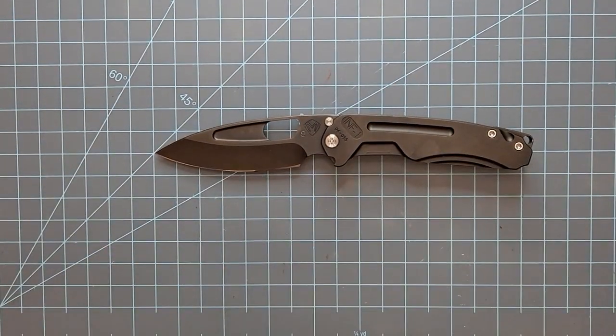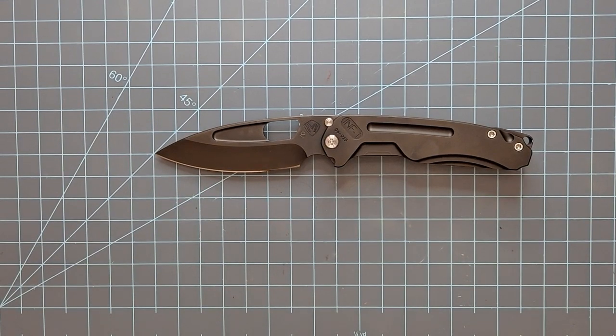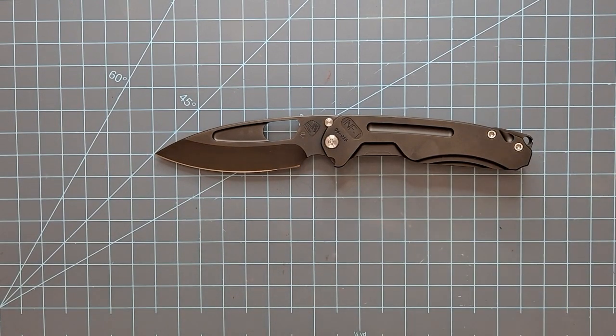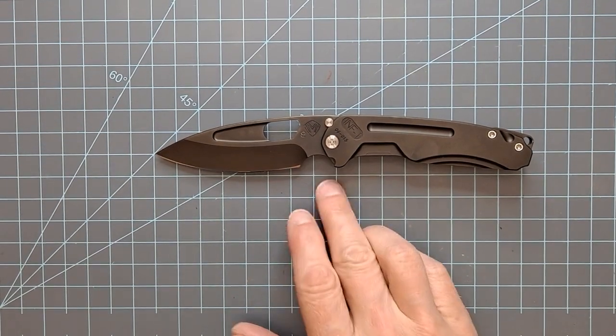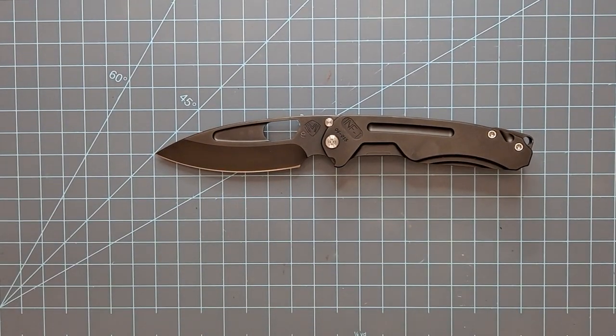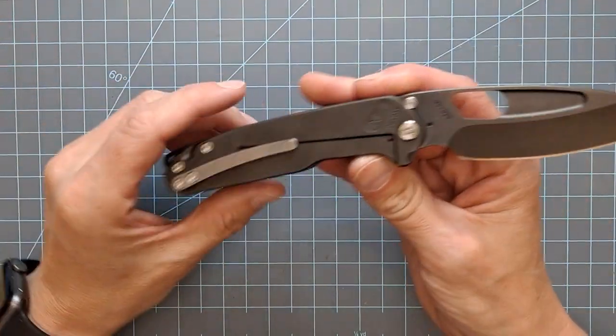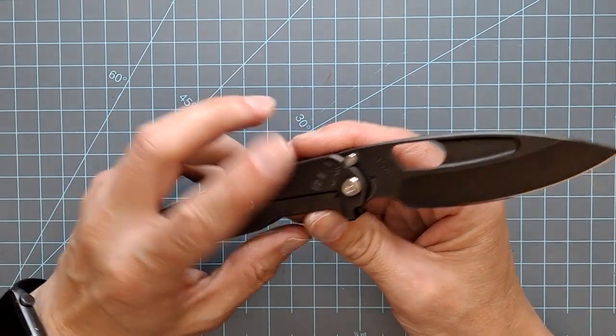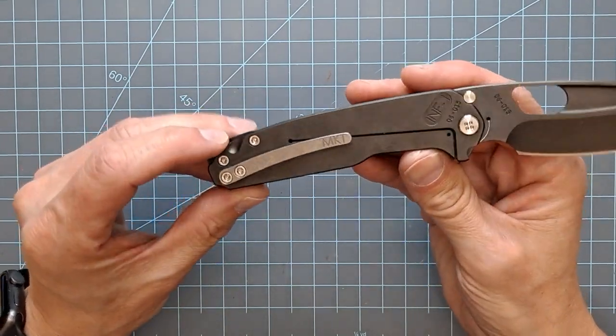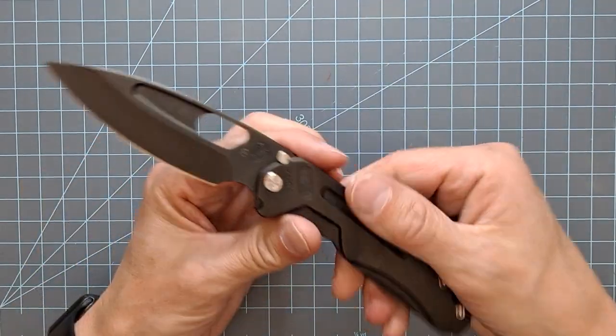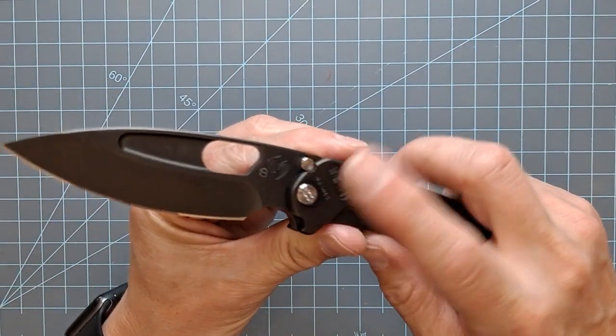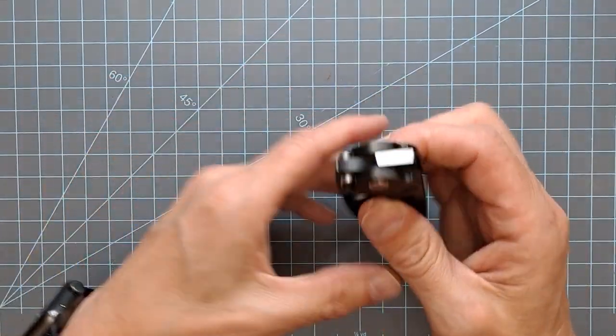As you can see, this is an all PVD knife. That's one of the few things that Medford doesn't do in-house is they don't do their own coating. It's done by a company called Armor Tough, which is right down the road in the Phoenix area. So it's a full PVD with standard just silver hardware, uncoated. It's got a tumble clip and it's got your hex hardware and then your proprietary pin right there for the pivot.